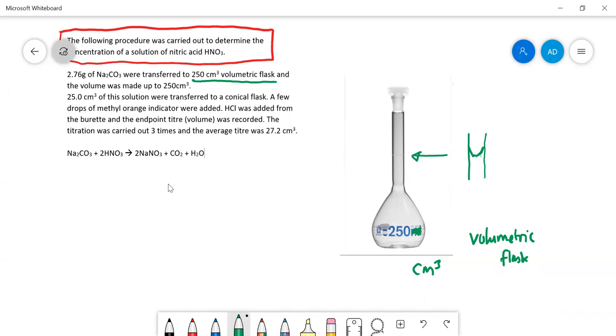It's a very accurate way of measuring volume. You would never use a measuring cylinder for this purpose because measuring cylinders are only accurate to within five percent, whereas this is a lot more accurate. This is a volumetric flask.